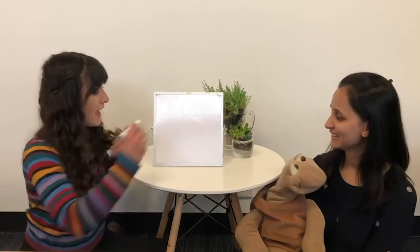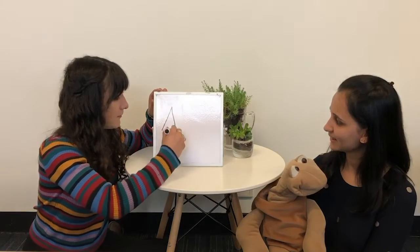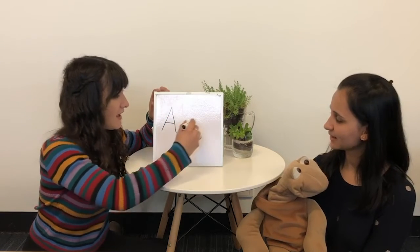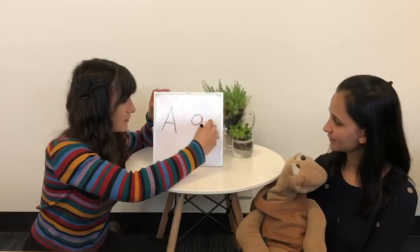We're going to look at the first letter of the alphabet. Can you tell me what it is, Nancy? In French we say A. Can you say Loulou? A. And in English we say A. That is the uppercase A and the lowercase A looks like that.